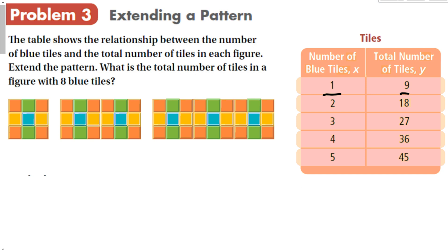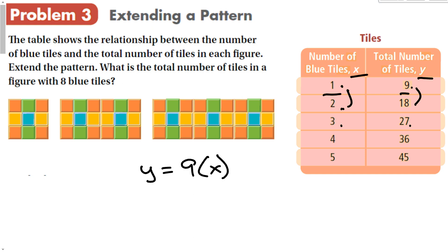Extend the pattern: what is the total number of tiles in a figure with 8 blue tiles? For every increase in blue tiles, the total goes up by 9. So the pattern is y = 9x, where y is total tiles and x is blue tiles. With 8 blue tiles: y = 9 × 8 = 72 tiles total.